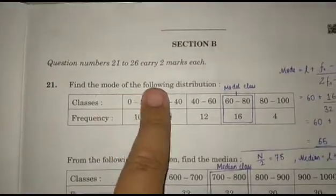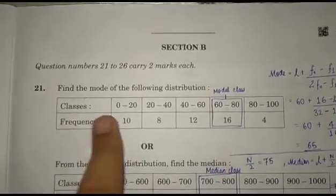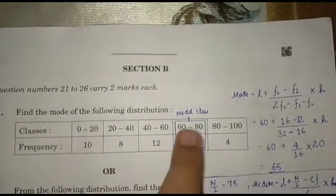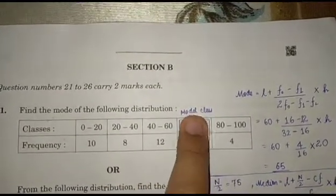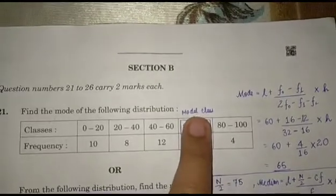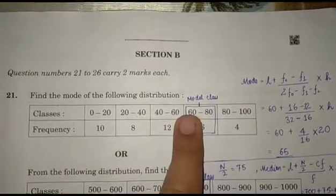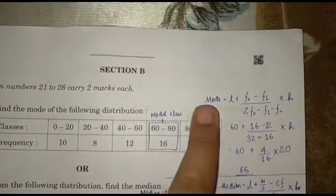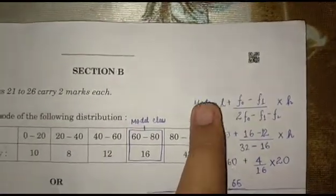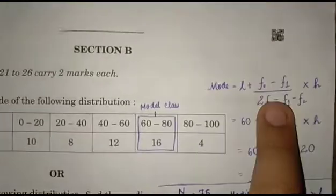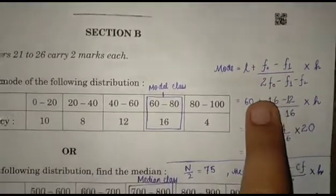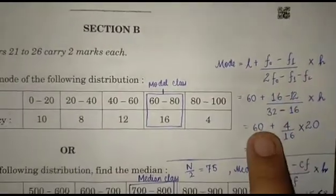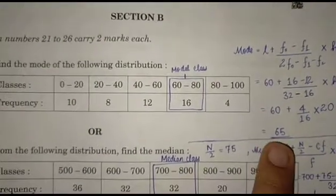In Section B, the first question asks for the mode of the following distribution. Different classes and frequencies are given. The modal class is defined as the class with maximum frequency. Your maximum frequency is 16, so the modal class is 60 to 80. Using the formula mode = L + (F0 - F1) / (2F0 - F1 - F2) × H, we get the mode as 65.